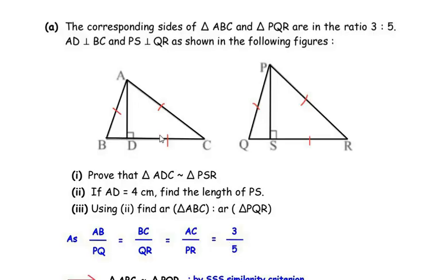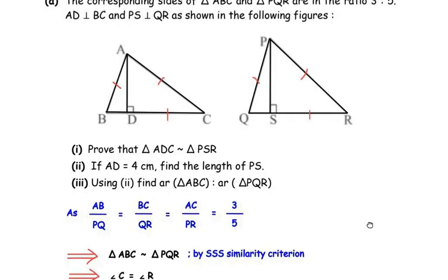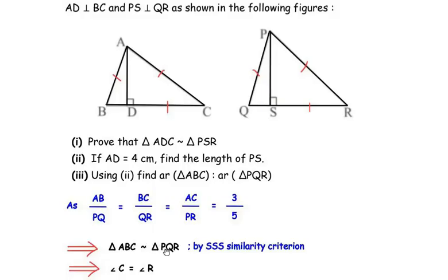Now since all the sides of the first triangle are in proportion to the sides of the second triangle, triangle ABC is similar to triangle PQR by the SSS similarity criterion. From this we can say that angle A equals angle P, angle B equals angle Q, and angle C equals angle R. We will use angle C equals angle R to prove that triangle ADC is similar to triangle PSR.